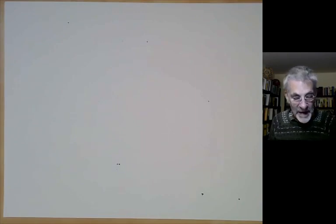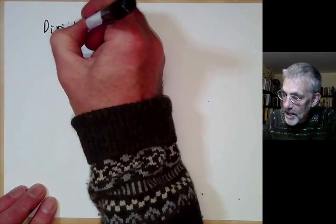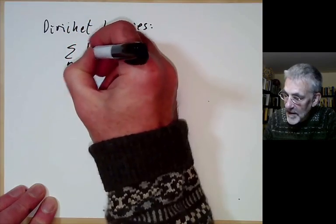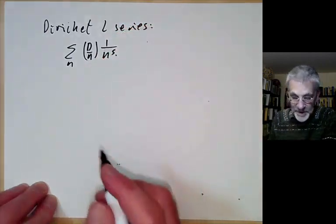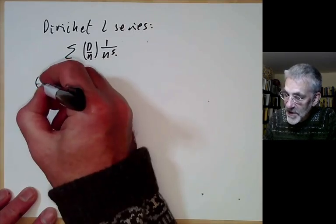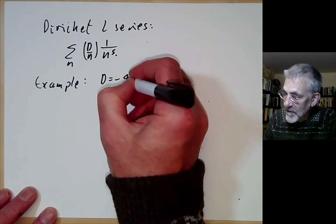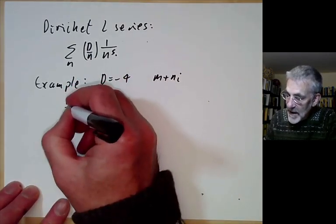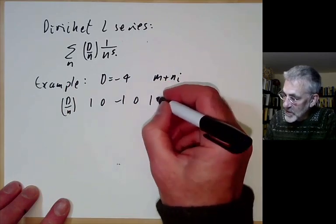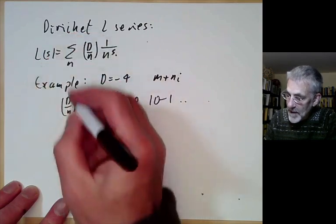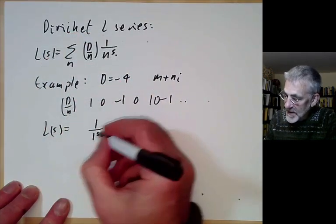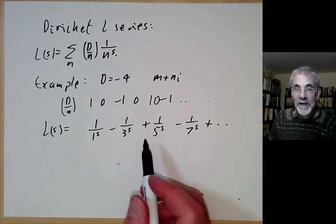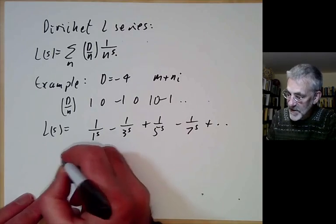We can also use this to define the Dirichlet L-series of an imaginary quadratic field: L(s) = Σ (D/n) × n^(−s). For the Gaussian integers with D = −4, the sequence (−4/n) is 1, 0, −1, 0, 1, 0, −1, ... so the L-series equals 1 − 1/3^s + 1/5^s − 1/7^s + ...